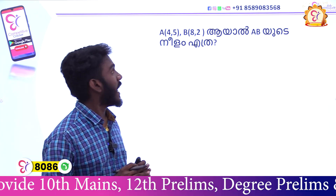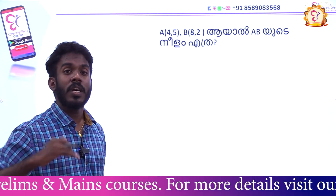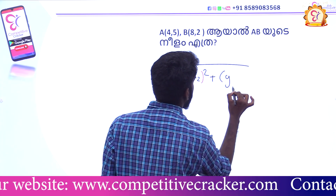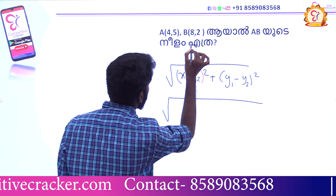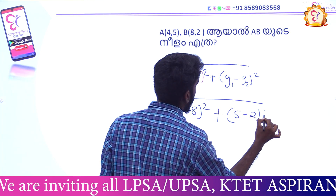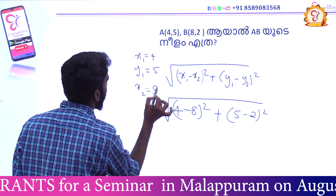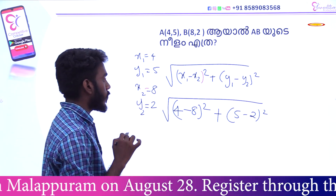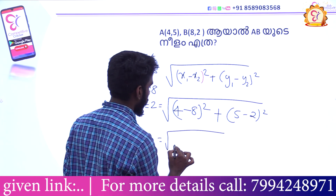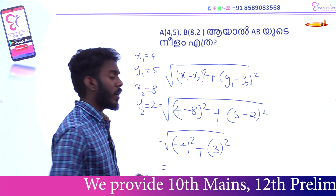A(4.5) B(8.2) — find AB. The equation is the root of x1 minus x2 the whole square plus y1 minus y2 the whole square. So the equation is the root of 4 minus 8 whole square plus 5 minus 2 the whole square.